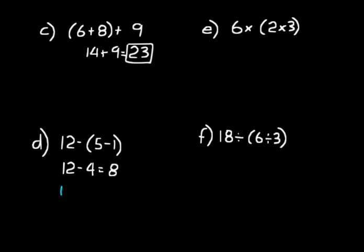If we had grouped it as (twelve minus five) minus one instead, twelve minus five is seven, minus one equals six — a different answer. So grouping does matter in subtraction, not in addition.